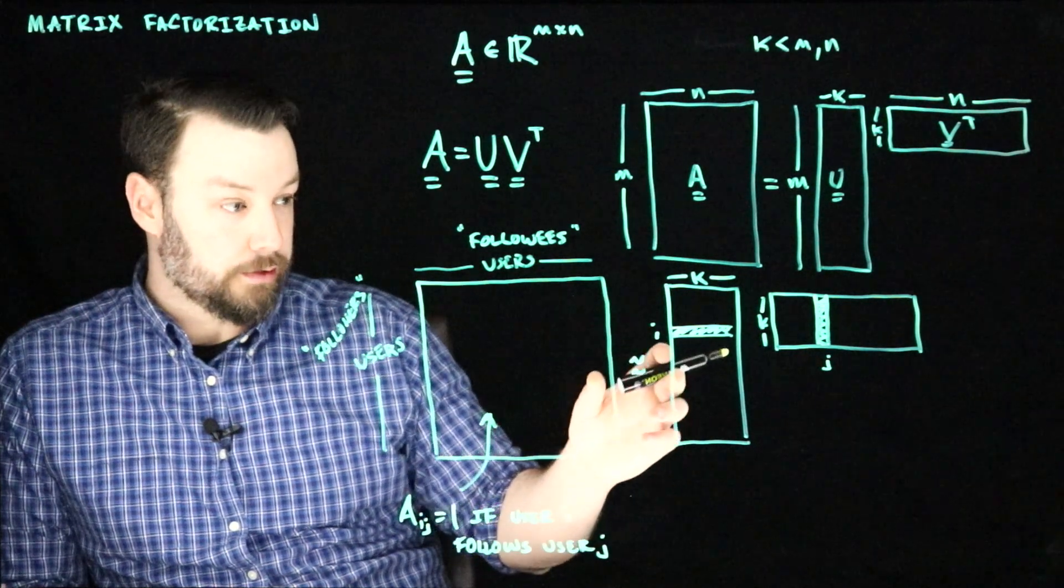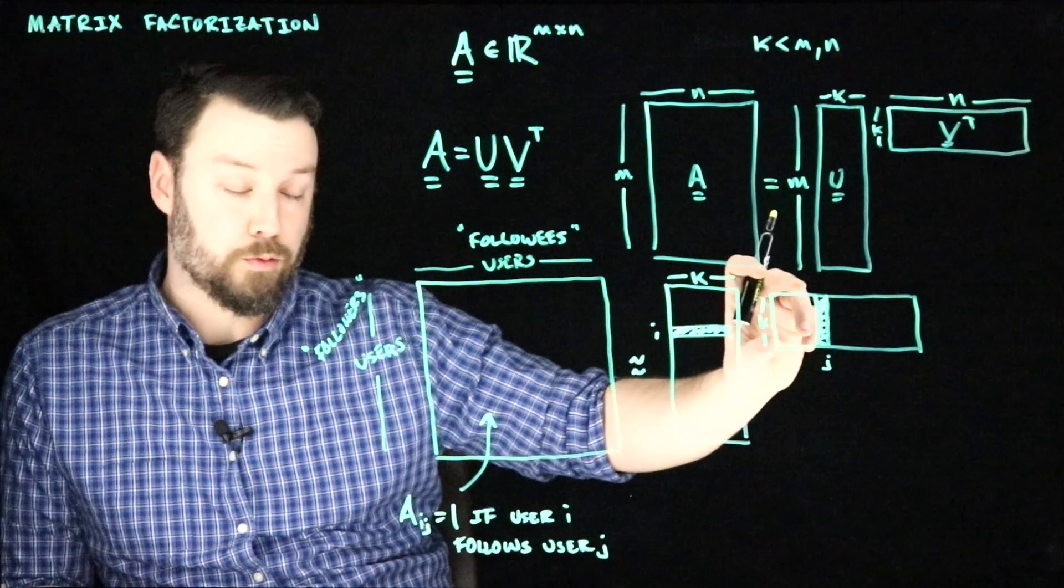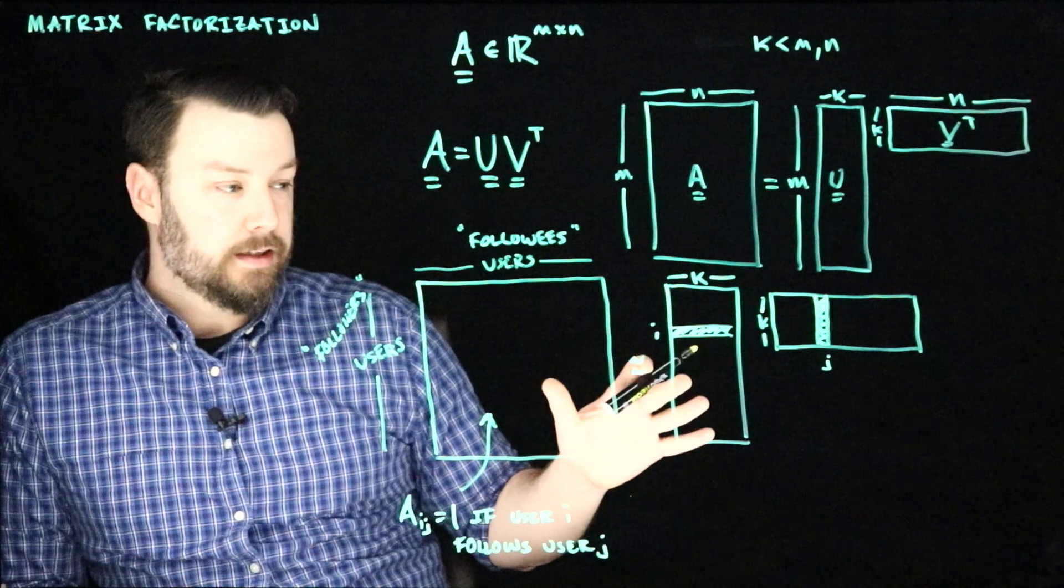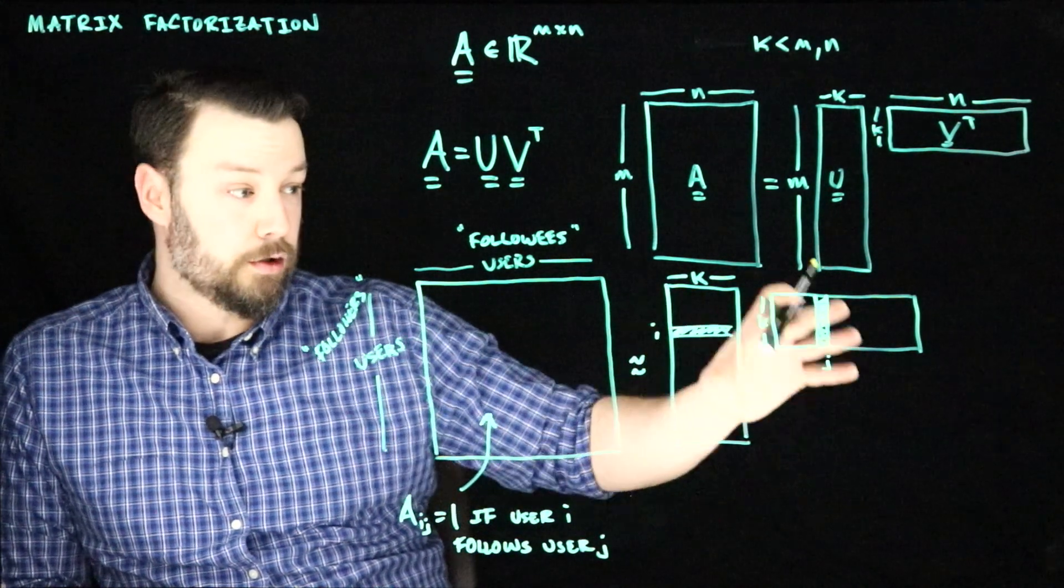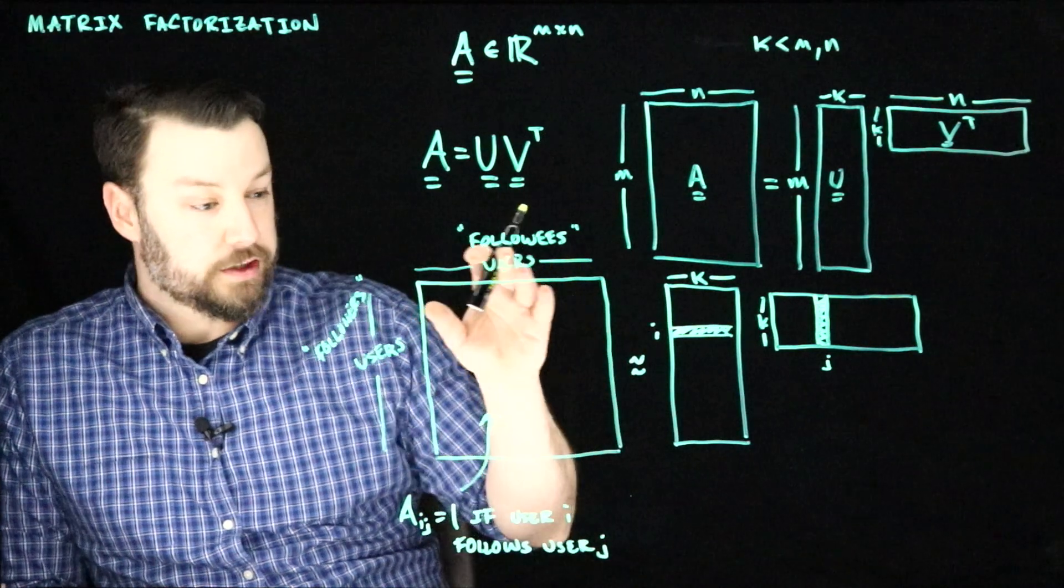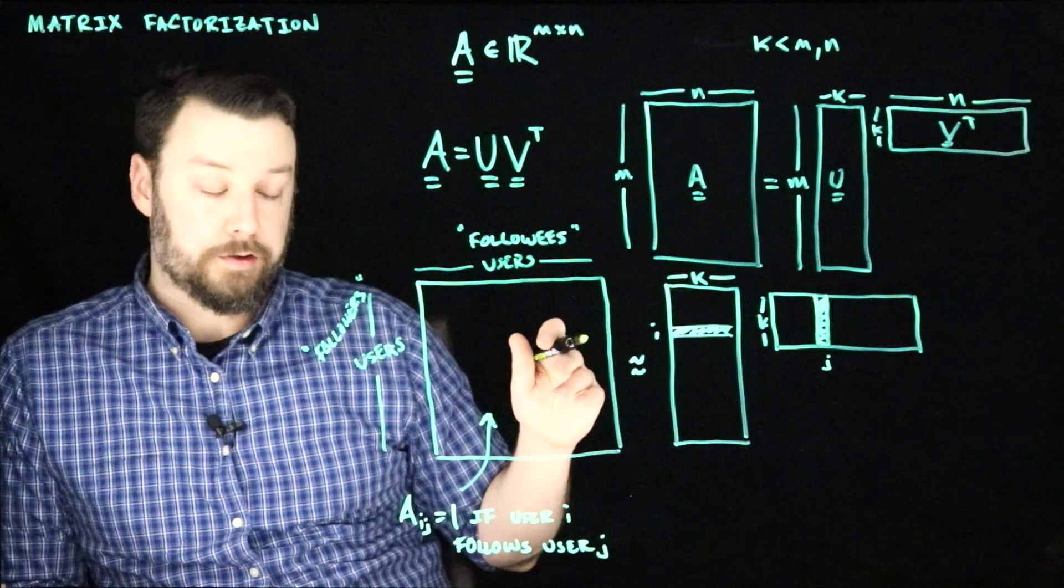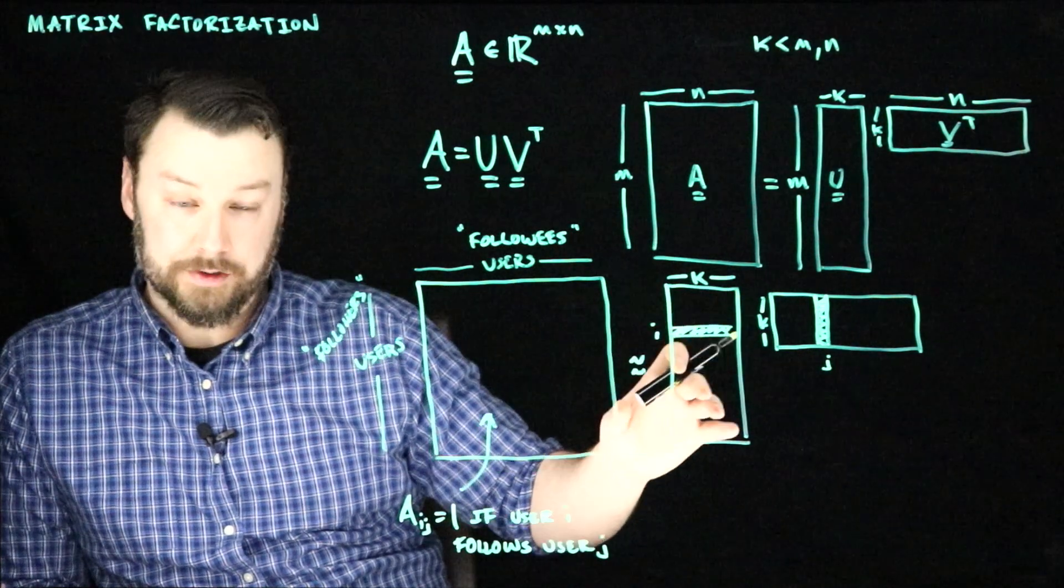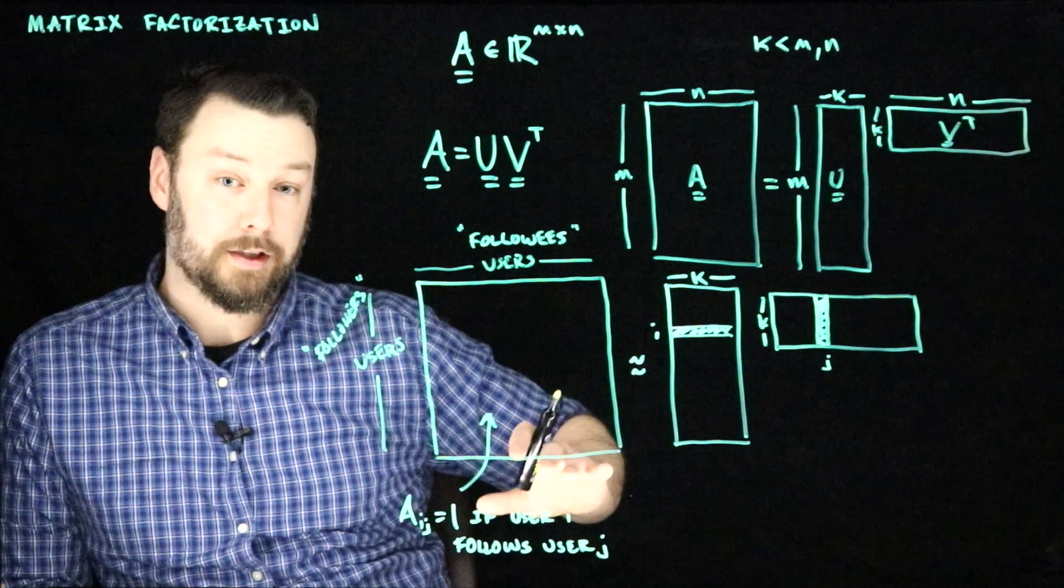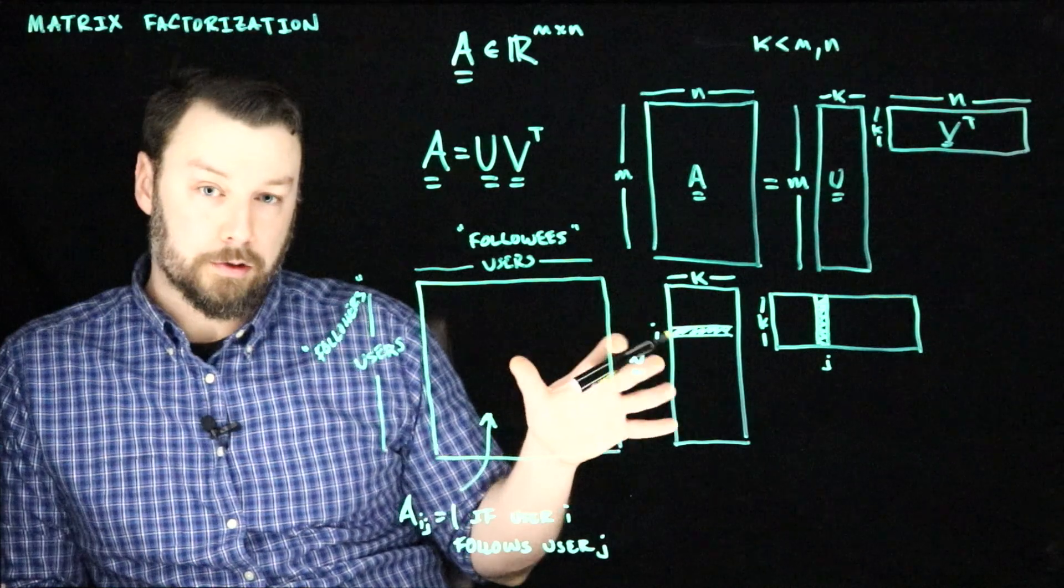Again, the idea here is that because this is restricted due to being a low rank matrix, that in order to explain this large amount of data, we can learn these matrices and that these kinds of patterns of consumption and production will actually emerge just from looking at the follow graph.